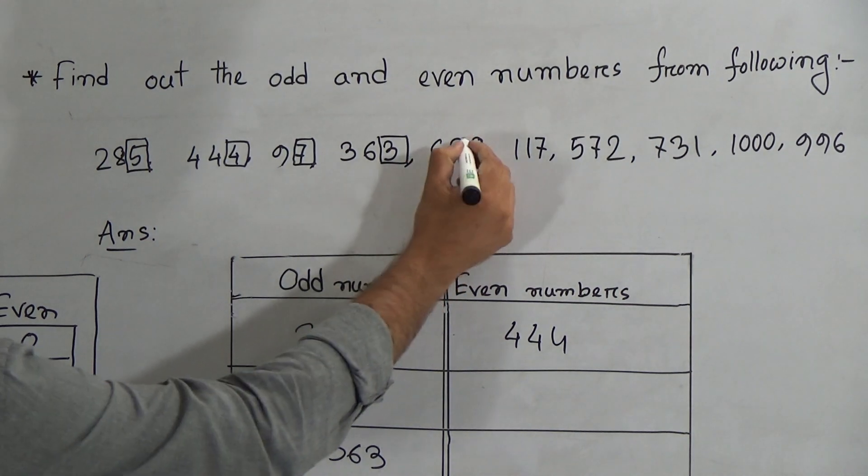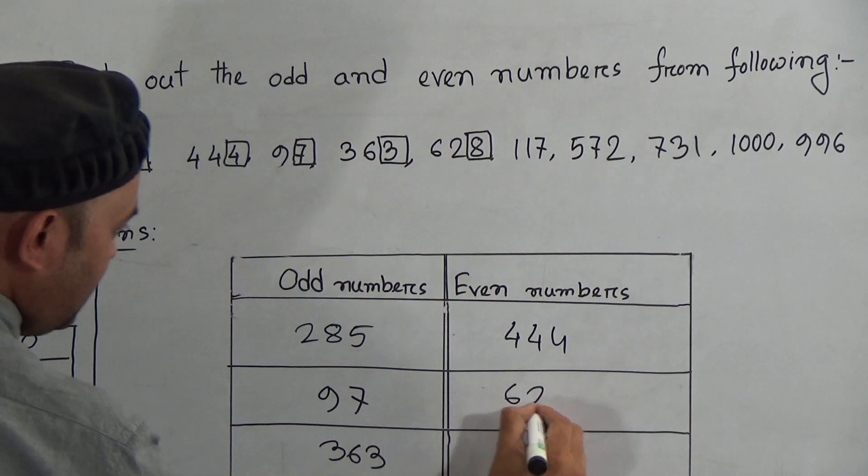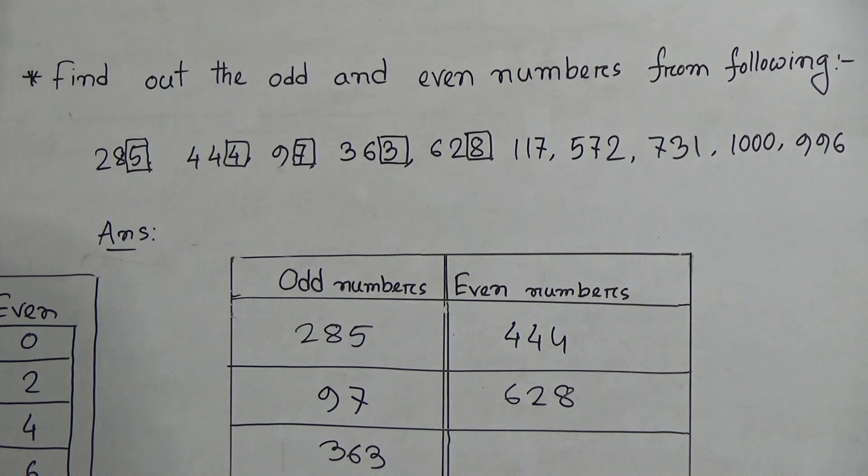628. Here 8 is the last digit, and 8 is the symbol of an even number, so 628 is an even number.